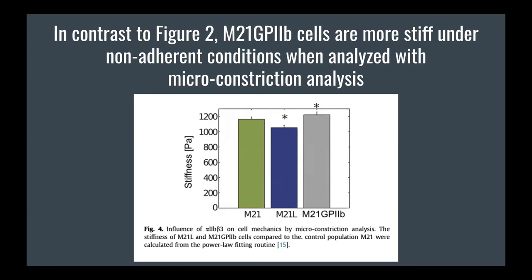This result contradicts their earlier finding that the alpha v beta 3 integrin is related to greater stiffness in melanoma cells. They reasoned that the M21-GP2B cell nucleus was softer and that there is a softer perinuclear area, and concluded that the micro-constriction test was not ideal because it only measured certain areas of the cell, which skewed the results.